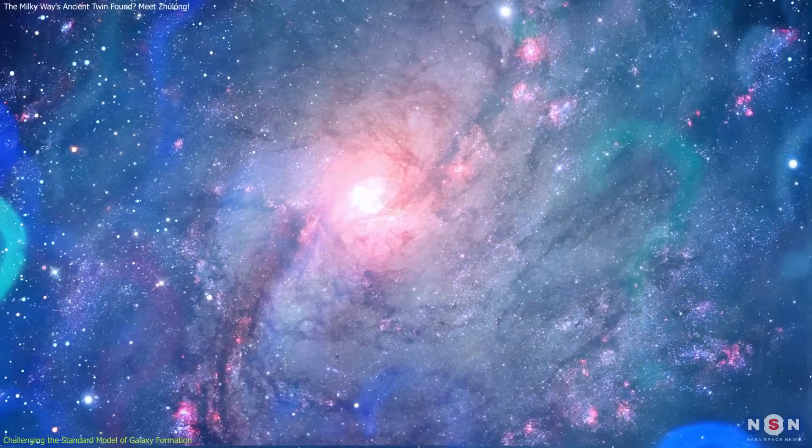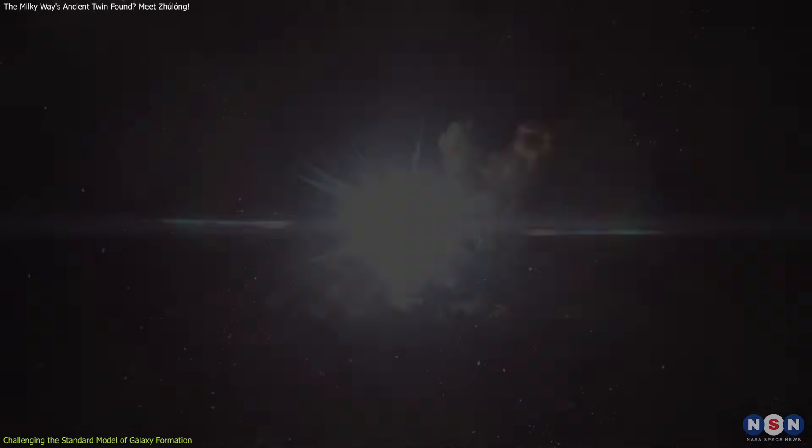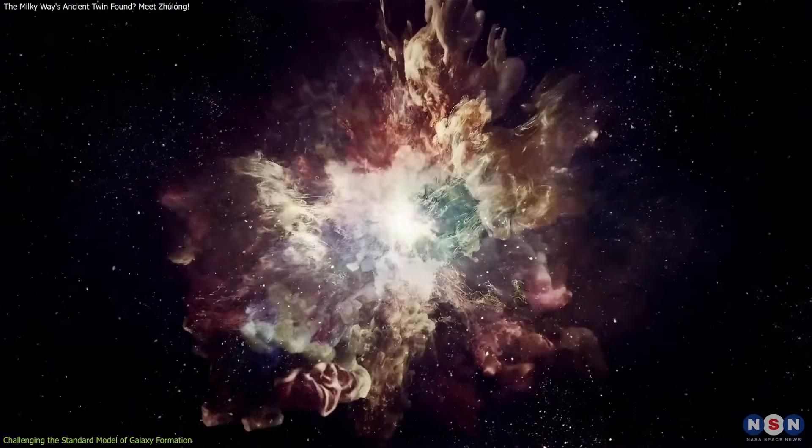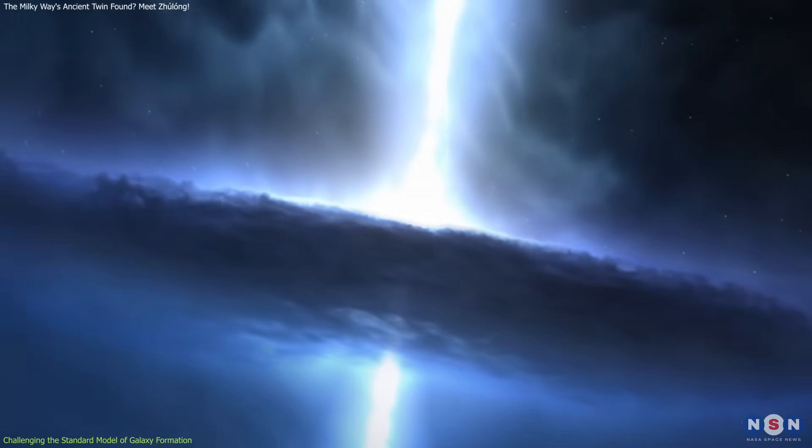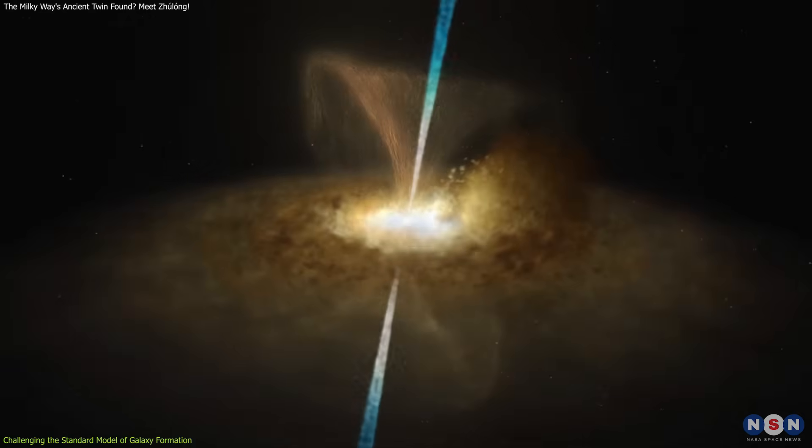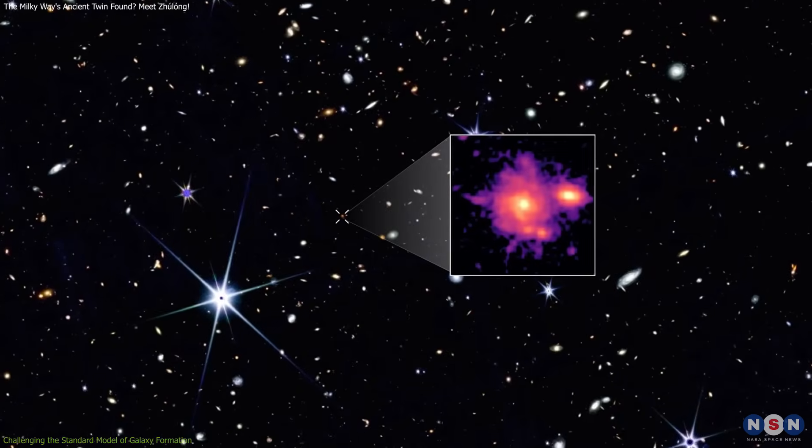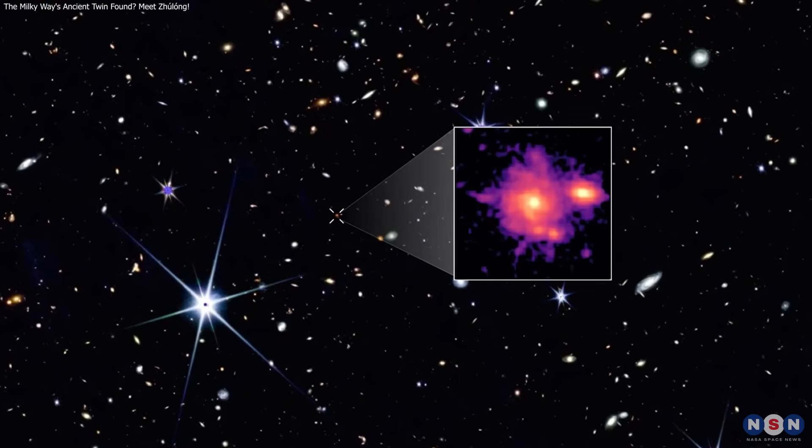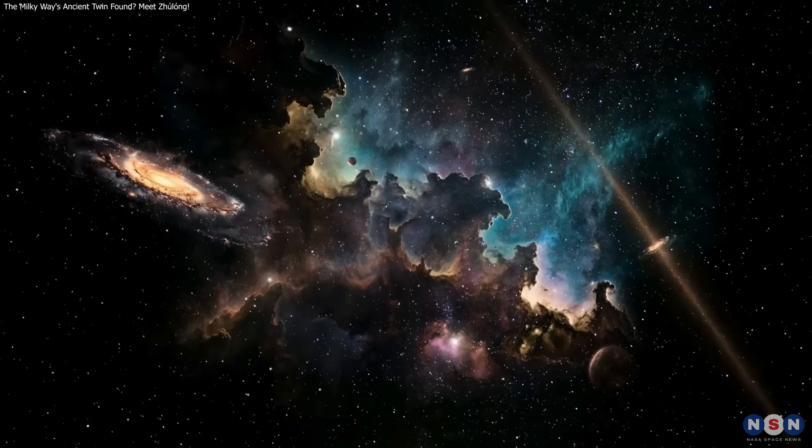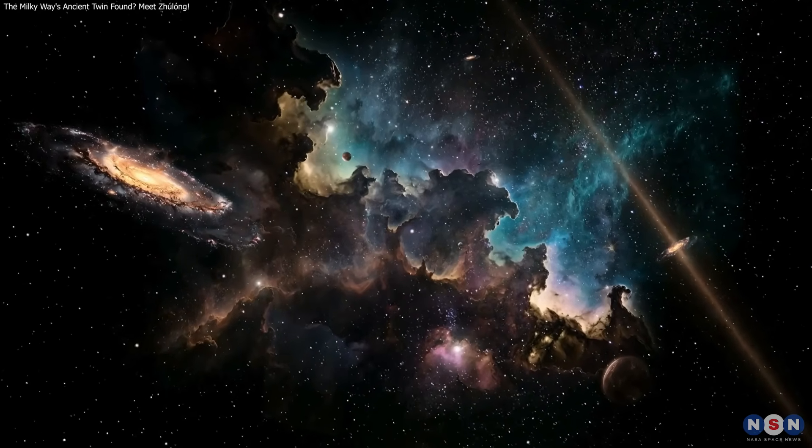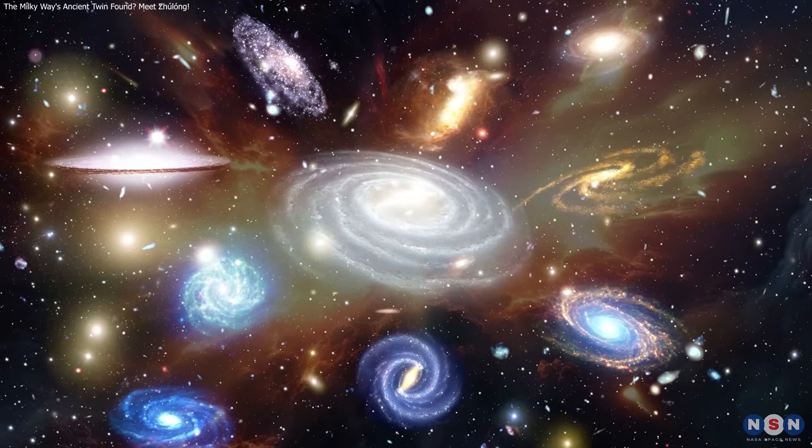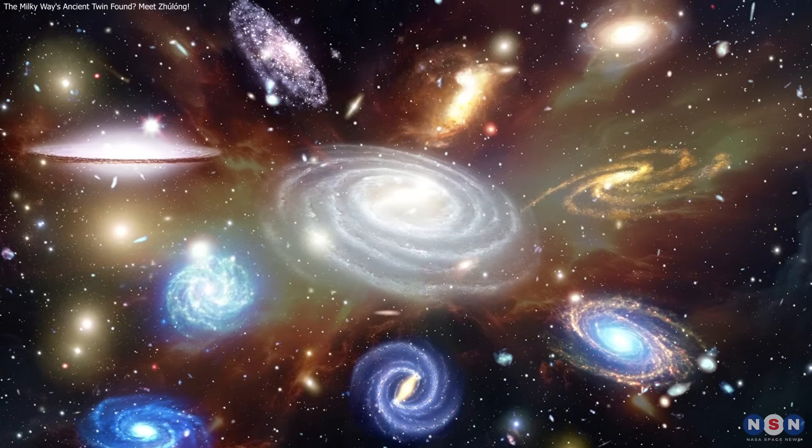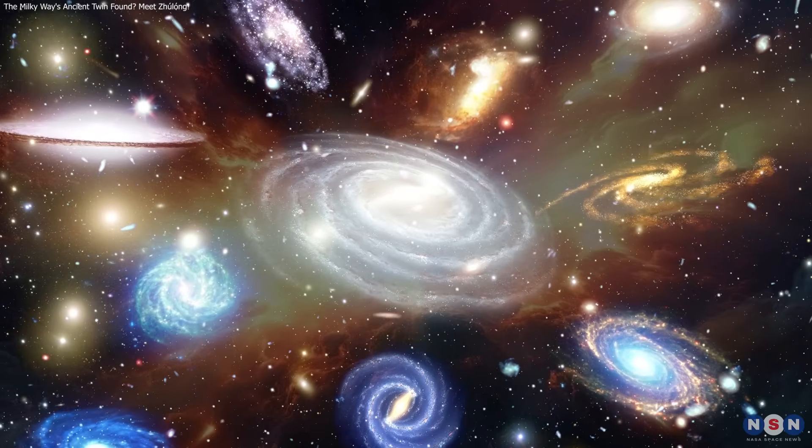On top of all this, this galaxy raises new questions about feedback mechanisms. Scientists used to think that violent events like supernova explosions and the fierce winds from black holes, called active galactic nuclei, would blast apart gas and slow down galaxy growth. But if Zhulong formed so early and stayed so well organized, maybe these destructive forces weren't as strong in the early universe as scientists believed. That would have given galaxies more time to grow, settle, and form beautiful spiral shapes, even when the universe was still young.